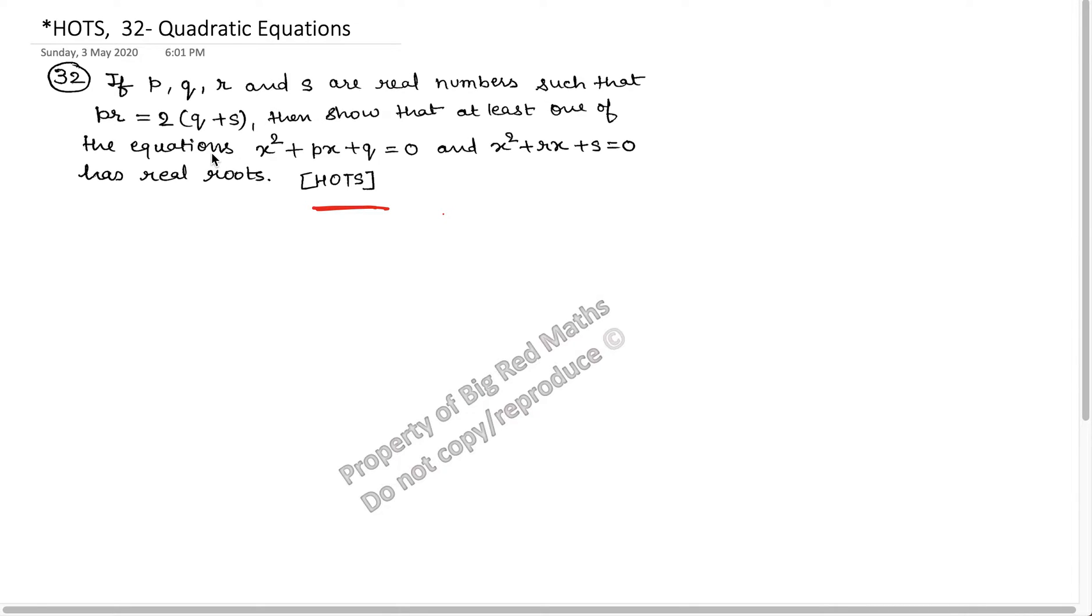It says if P, Q, R and S are real numbers such that PR is equal to 2Q plus S. This is the condition given. Then show that at least one of the equations, this is one equation and this is the second equation, has real roots.